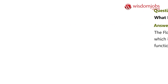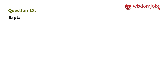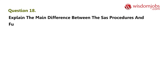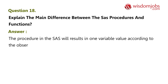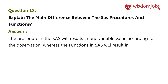Question 18: Explain the main difference between SAS procedures and functions. Answer: A procedure in SAS results in one variable value per observation, whereas functions in SAS result in multiple sets of variable values.